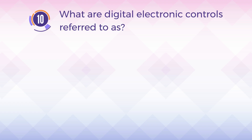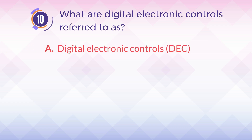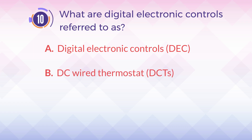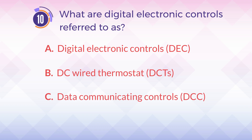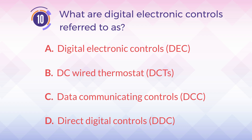Number 10. What are digital electronic controls referred to as? A. Digital electronic controls, DEC. B. DC wired thermostat, DCT. C. Data communicating controls, DCC. D. Direct digital controls, DDC.